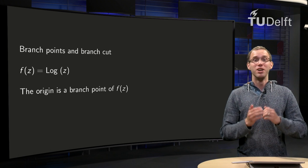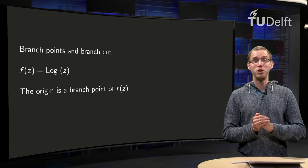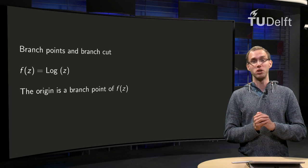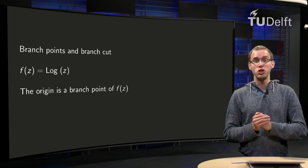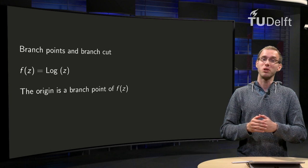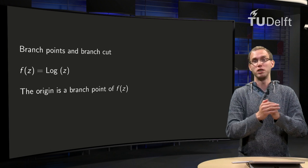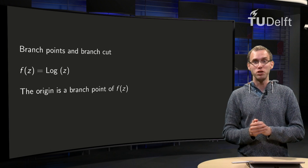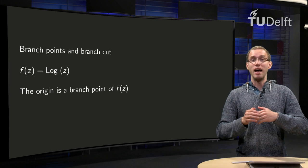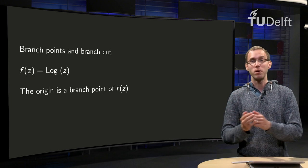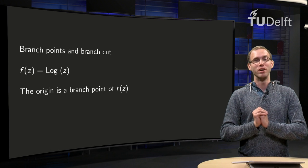Branch points are nasty. Just excluding branch points is not enough to make functions continuous. You have to adjust the domain in such a way that you also cannot go around the branch point. And that is a much more severe restriction. How are we going to do that? And does log have more than one branch point? That is what we will learn in this video.